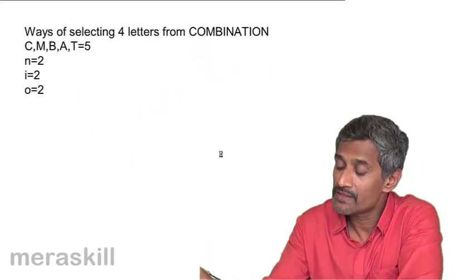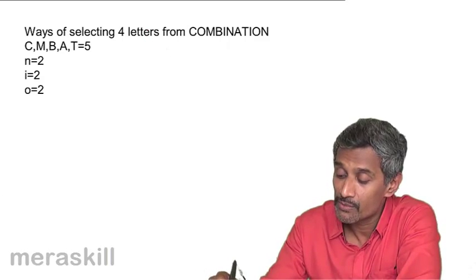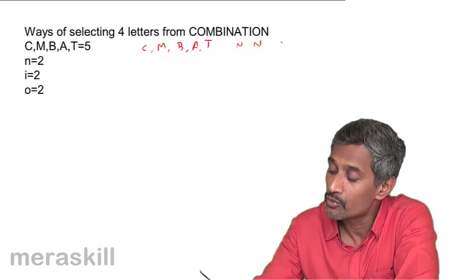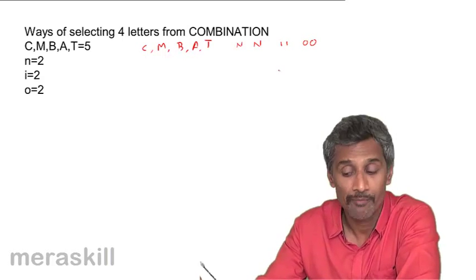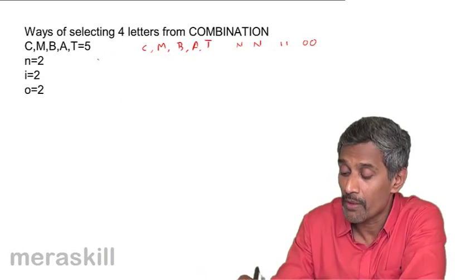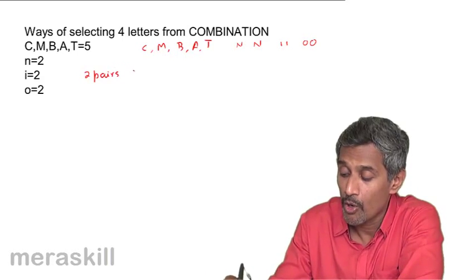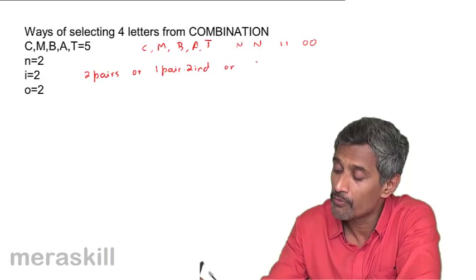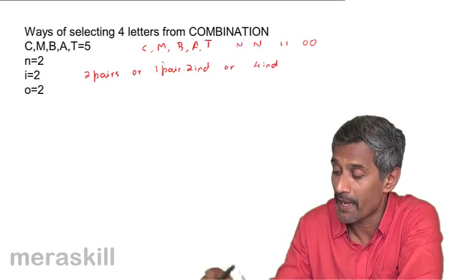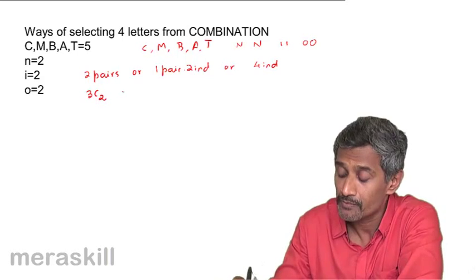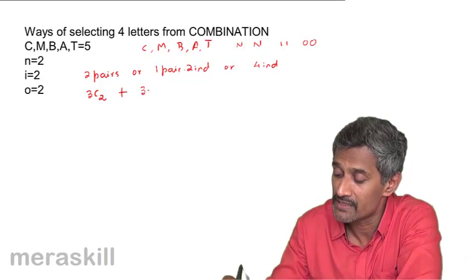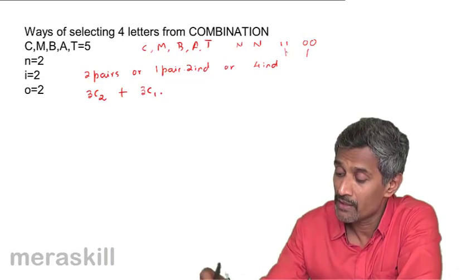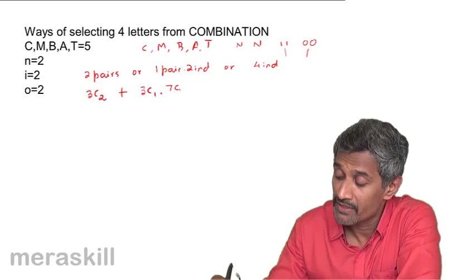Let's take the next one: ways of selecting 4 letters from the word COMBINATION. It has individual letters C, M, B, A, T, R and then 2 N's, 2 I's, and 2 O's — again 3 pairs. The approach is the same: either 2 pairs (3C2 ways), or 1 pair (3C1) with 2 individuals chosen from the 5 singles plus 1 from each of the 2 remaining pairs — that is 7C2.